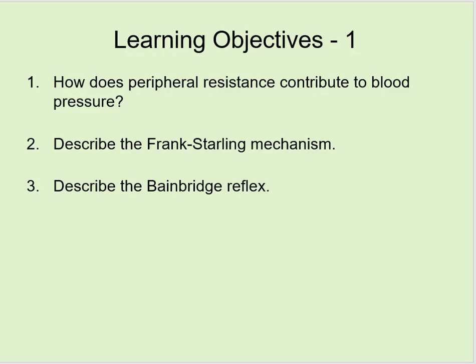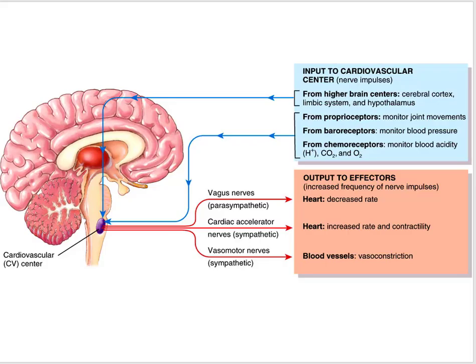The next few slides are a point of review to get us situated. Remember that the cardiovascular control centers live inside the medulla, and there are sources of input into those centers. There is output through autonomic neurons that can influence cardiac output, but they can also influence blood vessels — specifically impacting diameter, so that they can vasoconstrict or vasodilate.